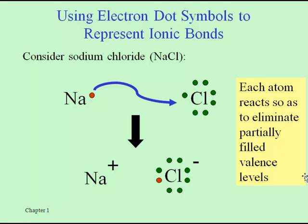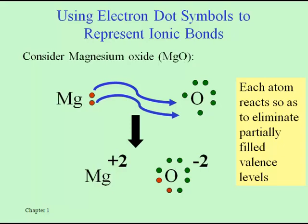Chlorine is much happier as a negatively charged chloride ion at the bottom and so both atoms are accomplishing this task of getting rid of partially filled valence levels and so they tend to do that. And metals love to give electrons away so there's plenty of examples.